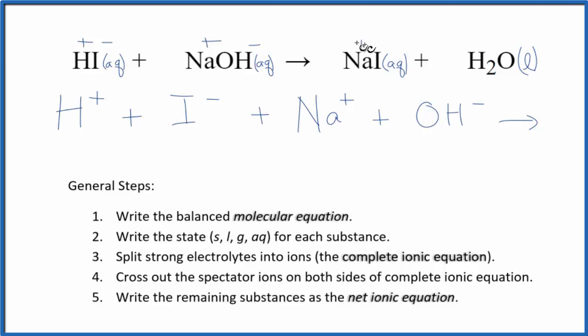For the products, we'll have our sodium ion here, Na plus. Then we'll have the iodide ion, I minus. And then with net ionic equations, we don't split liquids apart, so we just have H2O. This is the complete or total ionic equation.